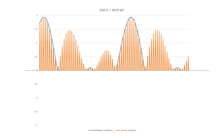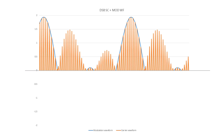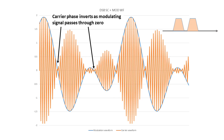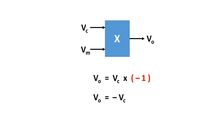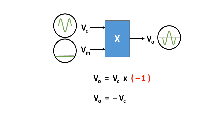An interesting thing about the DSBSC signal is that the carrier reverses phase as the modulating waveform passes through zero — you can see the kinks in the carrier waveform at the zero crossing points. The balanced modulator in the transmitter can be considered as an analogue multiplier: Vout = Vc × Vm. If Vm is +1 the output is Vc; if Vm is -1 the output is -Vc, meaning the carrier is inverted. As the modulating signal varies plus and minus, as it goes through zero the carrier phase inverts.